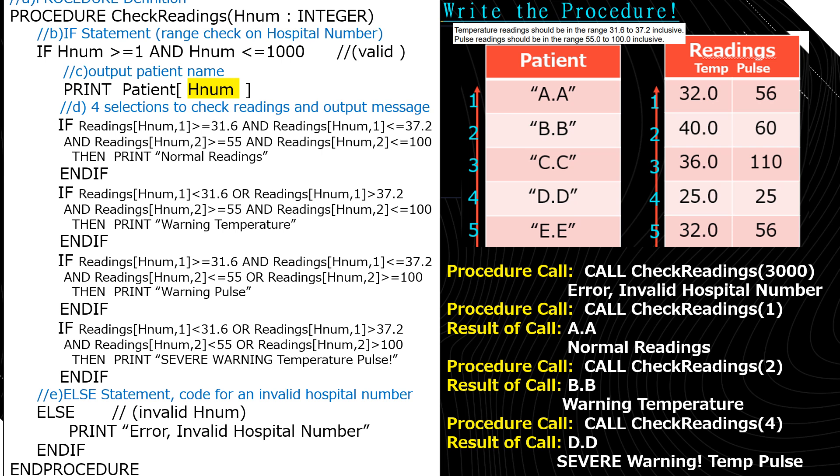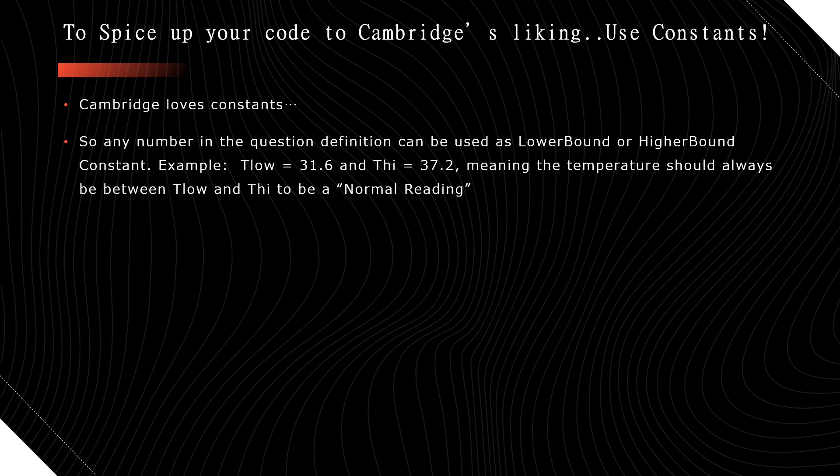One thing you could add to this code is constants — Cambridge really likes constants in their long questions. Any number from the question definition, so 31.6, 37.2, 55, and 100, could be declared as constants: T_LOW = 31.6, T_HIGH = 37.2, P_LOW = 55, P_HIGH = 100. Let me know if this code was working or what you think about it. Thank you very much for watching. Bye-bye.